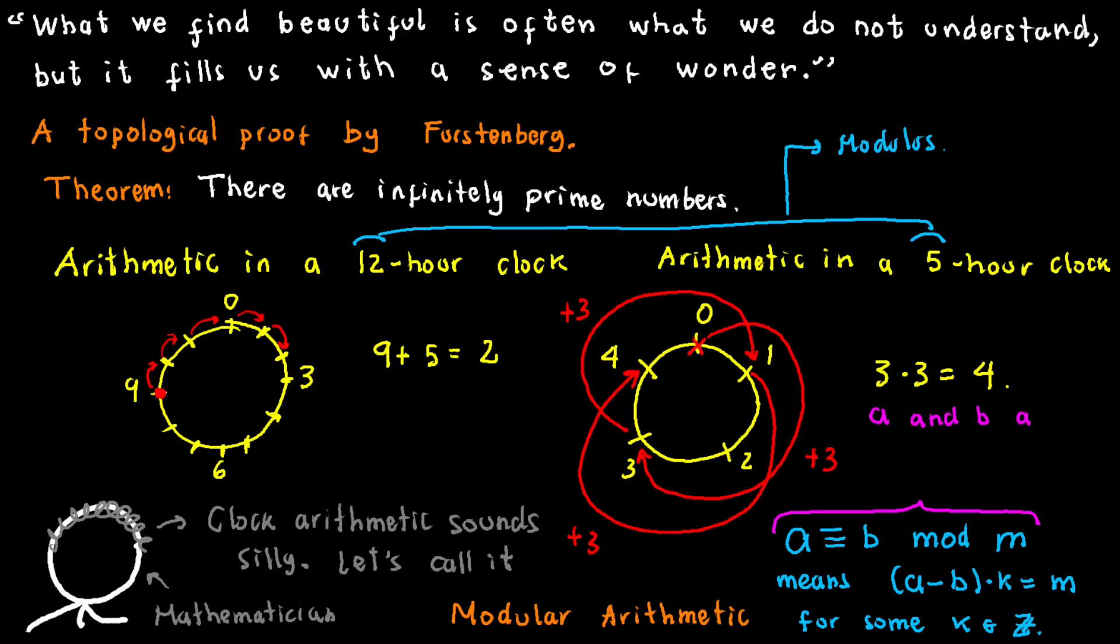For instance, 2 and 17 are congruent modulo 5 because 17-2 equals 15, which is a multiple of 5.